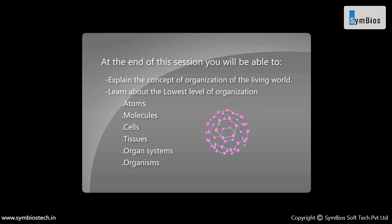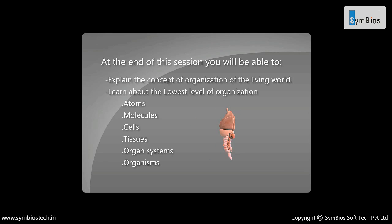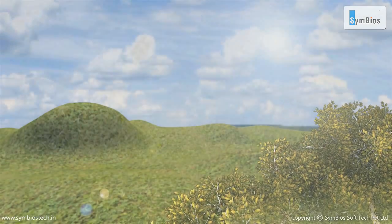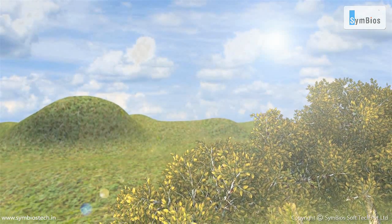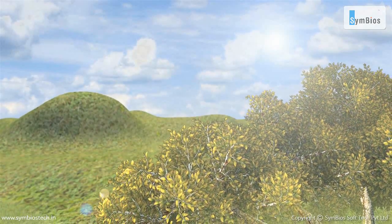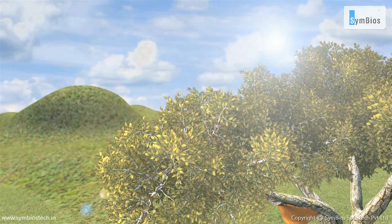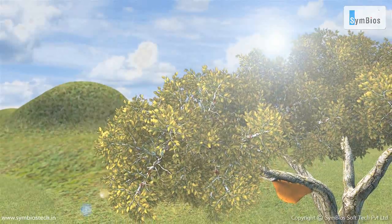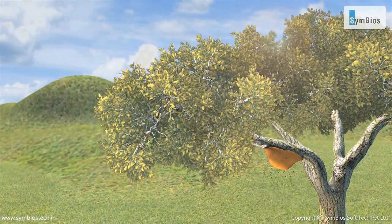The levels of organization include atoms, molecules, cells, tissues, organ systems, and organisms. An organization is a structure in which various parts perform their own function so that as a whole it performs the function for which it is made.